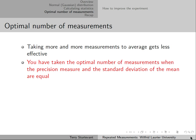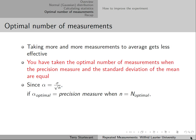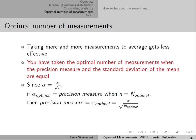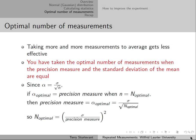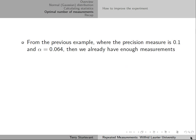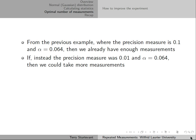Taking more and more measurements gets less and less effective over time. There's a limit to how many measurements you should take. You've taken the optimum number of measurements when the precision measure and the standard deviation of the mean are equal. Since alpha equals sigma over the square root of n, setting alpha equal to the precision measure gives the optimal number of measurements as the standard deviation divided by the precision measure, all squared. In our previous example, where the precision measure was 0.1 and alpha was 0.064, we already have enough measurements.